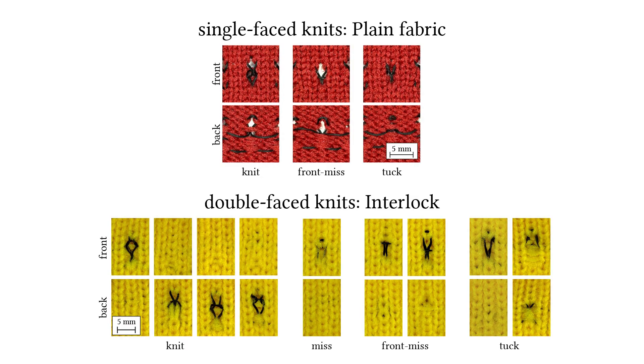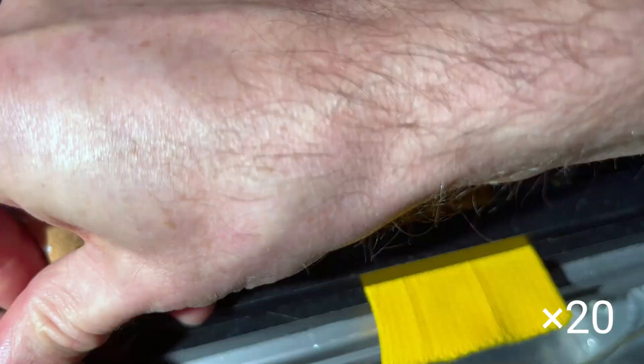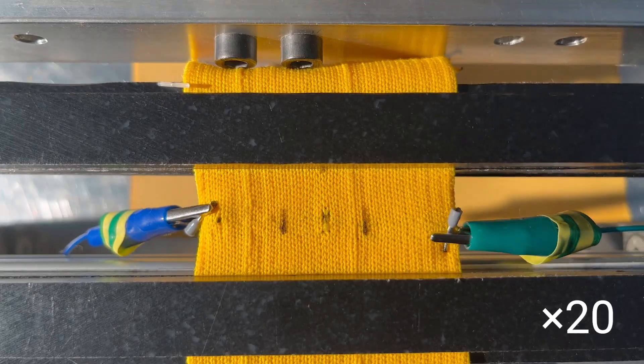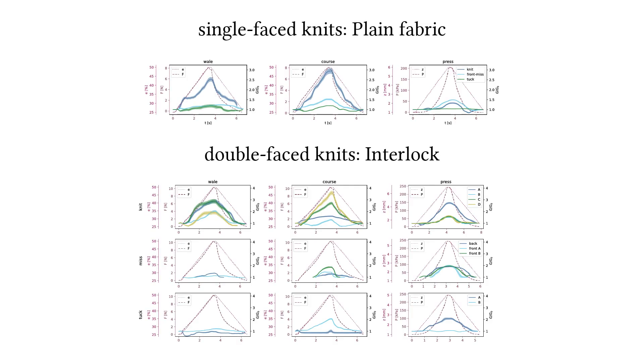We fabricated single-faced as well as double-faced samples to explore possibilities of sensor integration and evaluated these samples using an automated testing setup to investigate their response regarding strain and pressure. Results showed that the samples feature largely varying characteristics, depending on loop composition.